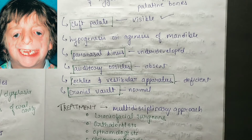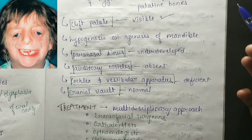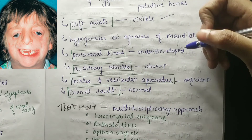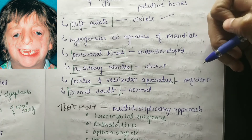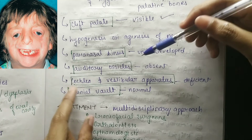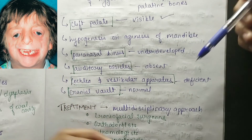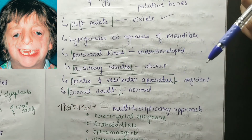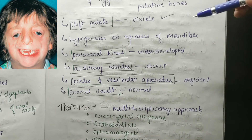Auditory ossicles are absent, and the cochlea and vestibular apparatus are deficient. Middle and internal ear malformations are also present. Paranasal sinuses are underdeveloped and there is deficiency of eyelashes.